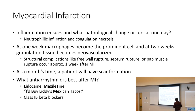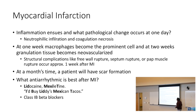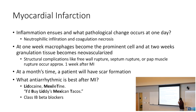When we're talking about myocardial infarction and the inflammation timeline: at one day you get neutrophilic inflammation and coagulation necrosis. At one week, macrophages start coming in, and at two weeks you get granulation tissue that is more neovascularized. It is at that one-to-two-week period that you're going to get structural complications from the heart. At one month the patient will have scar formation. One antiarrhythmic best after an MI is the class 1B antiarrhythmics — lidocaine and mexiletine. A good mnemonic: 1B, best after a myocardial infarction.